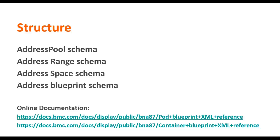Address blueprint is one type using which a specific IP address can be acquired, which can be used either for provisioning use cases or for infrastructure management. For example, gateway is one type where one would want to acquire a specific IP address to indicate what is the gateway for a given network.